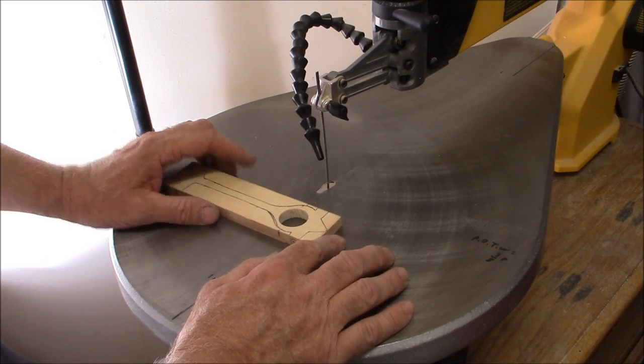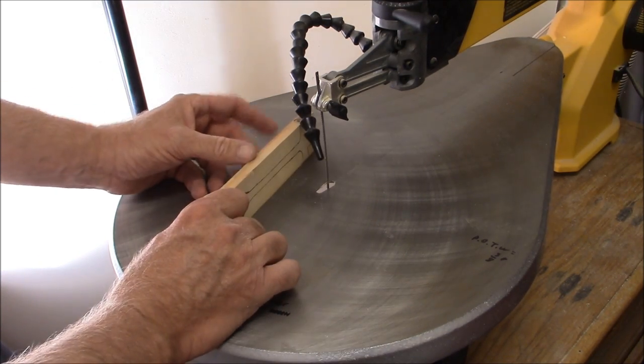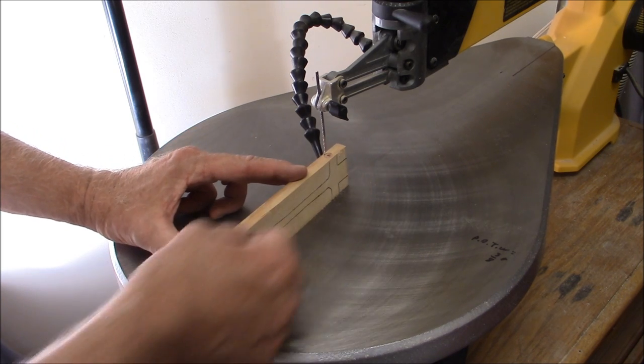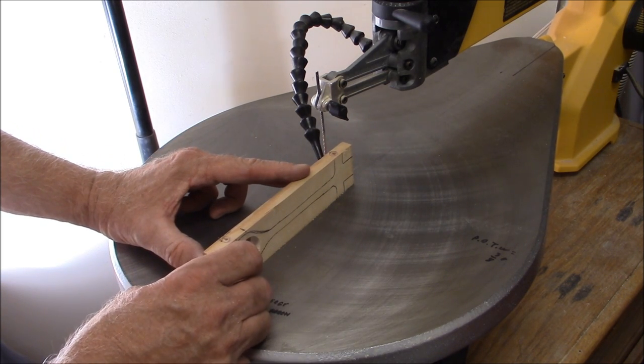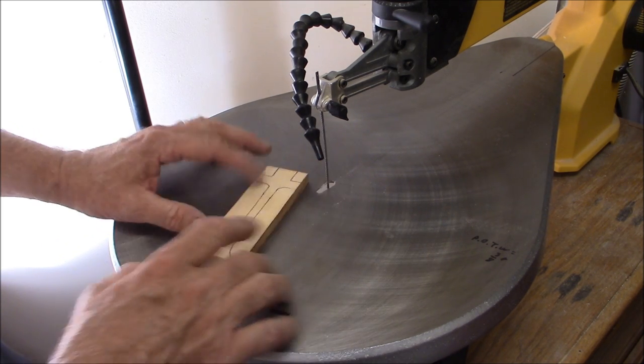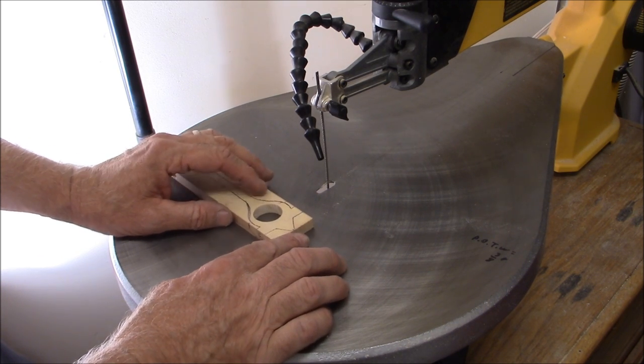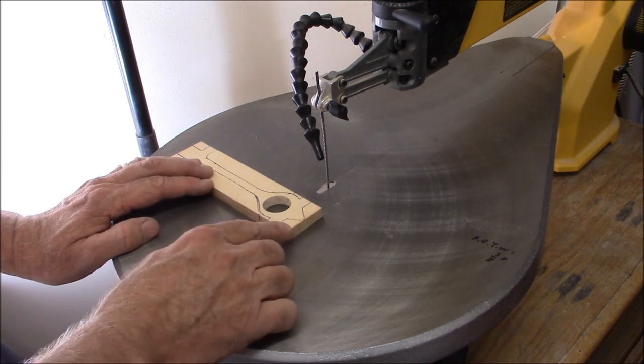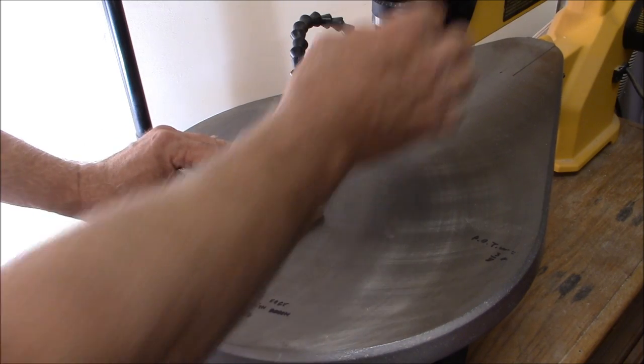While a band saw is preferable for slicing your main body width thickness, I think a scroll saw is actually much more accurate and easier to control when you're cutting out the actual body shape. So here we go.